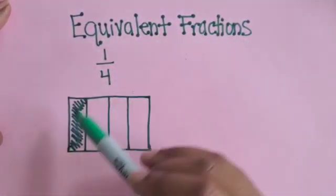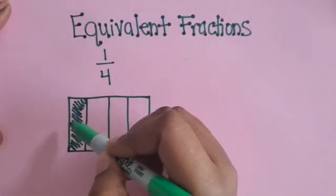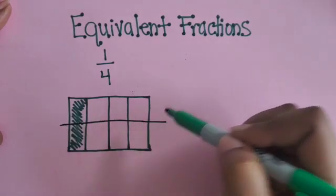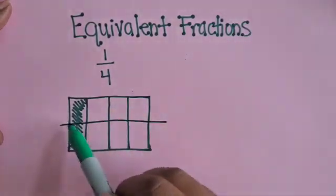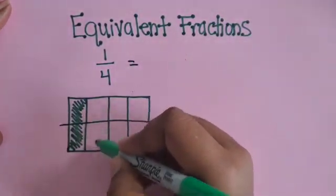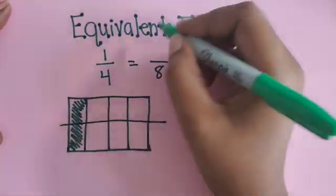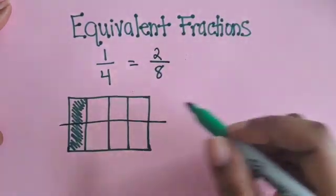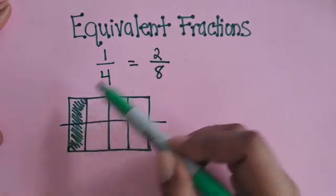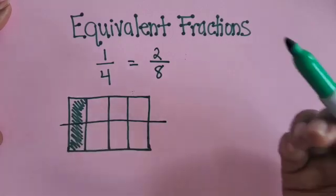To make it an equivalent fraction, it will be represented the same — it's just going to have a different name. So if we partition that rectangle in half going horizontally, now we have 8 total parts: 2, 4, 6, 8. So our new denominator is 8 and we have 2 parts shaded in. The area is still represented the same, it's just now known as 2 eighths instead of 1 fourth. They are equivalent — they're representing the same amount or number.